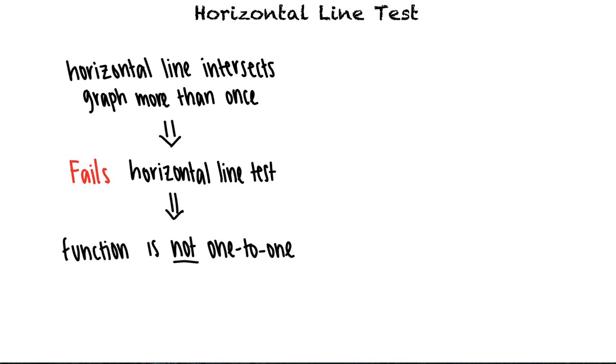If it is impossible to draw a horizontal line that intersects the graph more than once, then the graph passes the horizontal line test. And this means the function is 1 to 1.